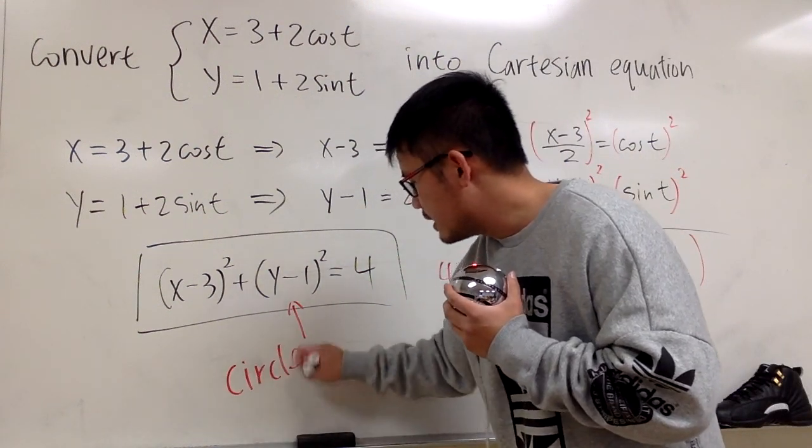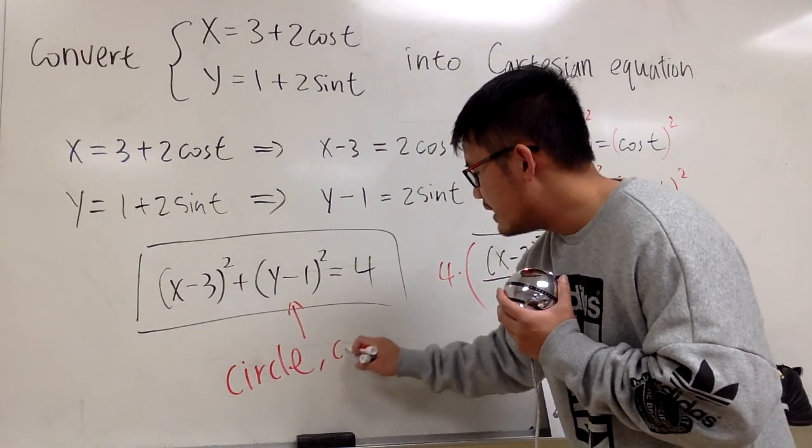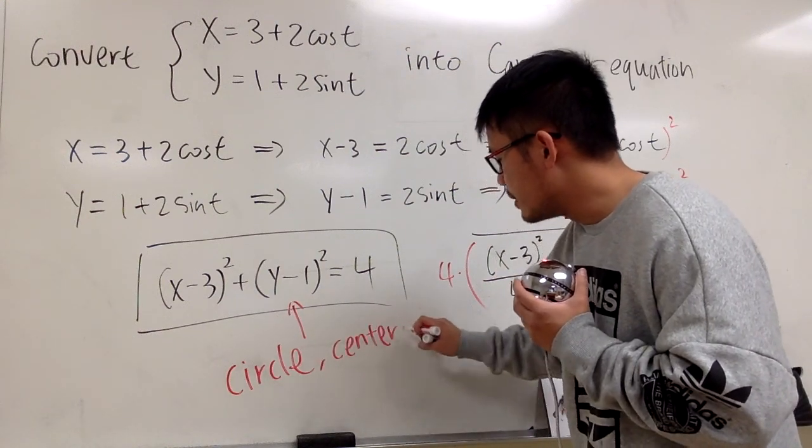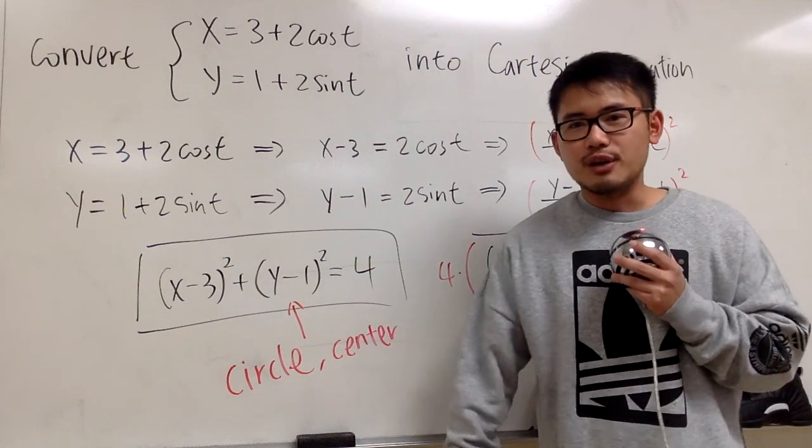Let me write it down for you guys. This is going to be a circle, and then two important things that you have to tell me. The center of the circle and the radius of the circle.